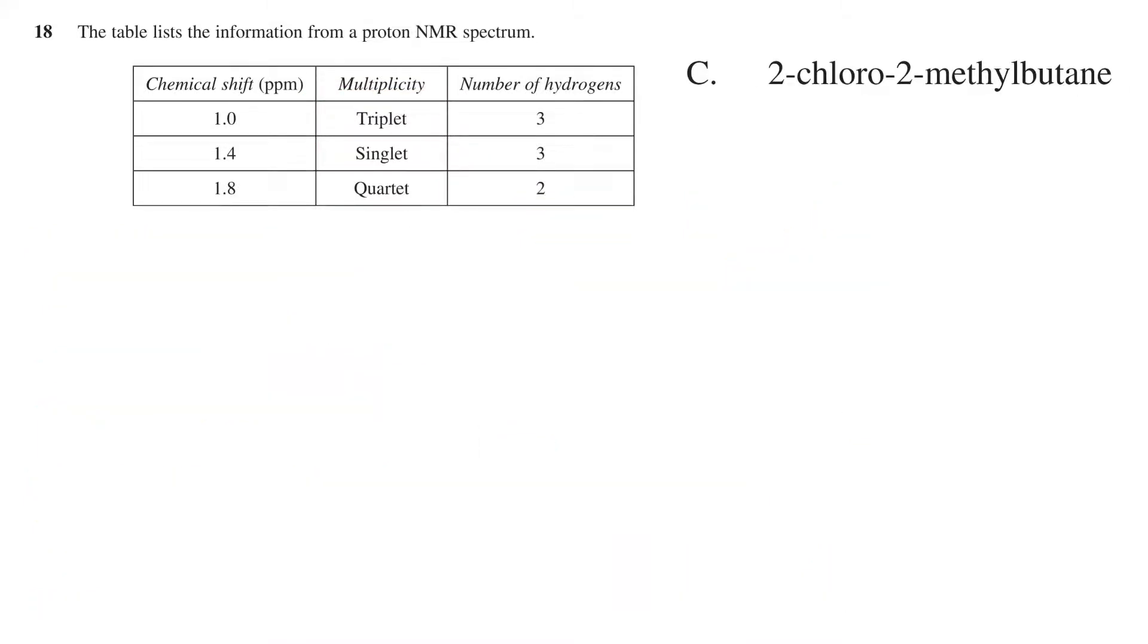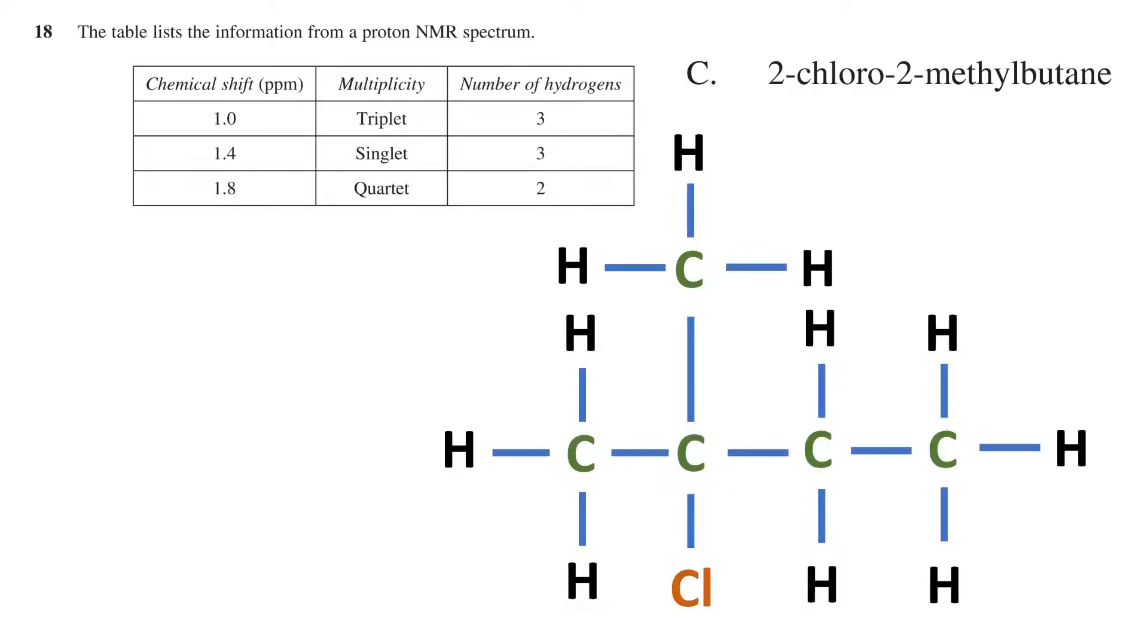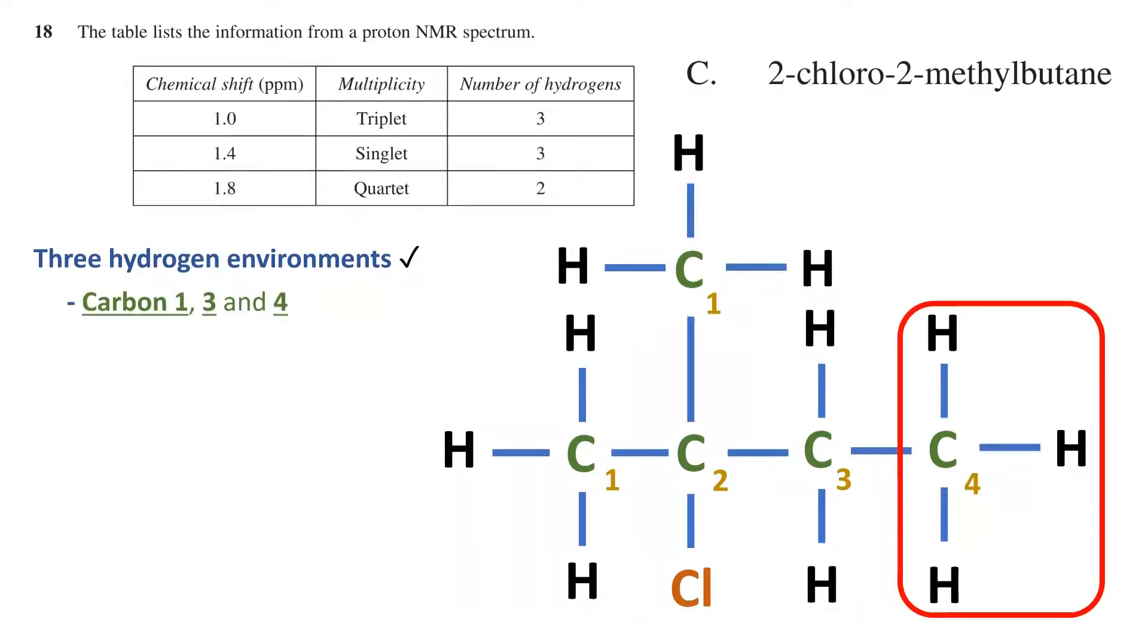Option C is 2-chloro-2-methylbutane. Drawing this out and labeling the carbon atoms we get. As we have discussed before, this molecule has three hydrogen environments off of carbons 1, 3 and 4. Now,